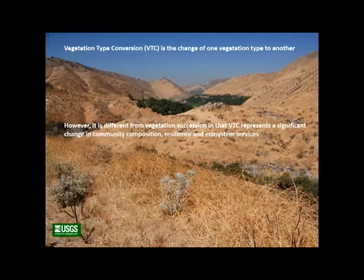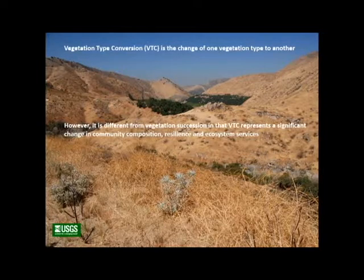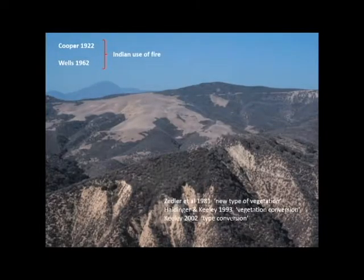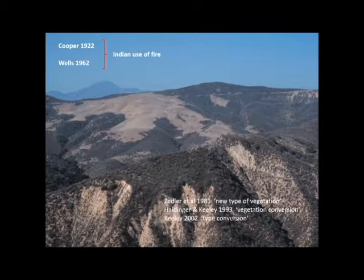This is a primer about type conversion to give you some ideas about what we know. Vegetation type conversion is a change from one vegetation type to another. It's different from ecological changes such as succession because it's associated with a significant change in community composition, change in resilience, and ecosystem services. We're talking about something that is not a natural ecological process.